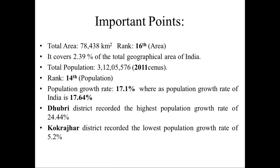The total area of Assam is 78,438 km², ranking 16th among all Indian states. This represents around 2.9% of the total geographical area of India. The total population of Assam is around 31,25,576, based on the 2011 census, which is held every 10 years in India. In terms of population, Assam ranks 14th among all states.